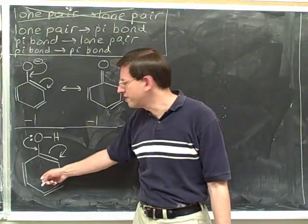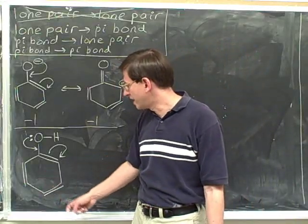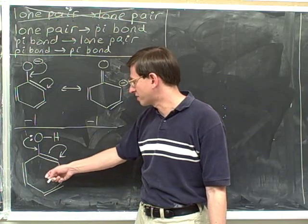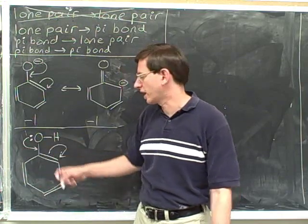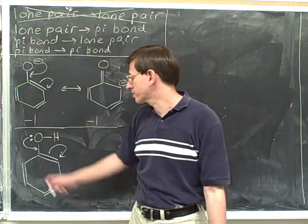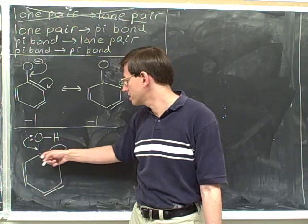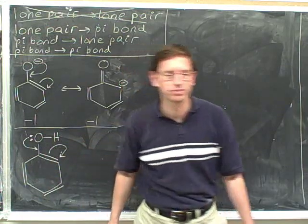I'd like you to work now with this resonant structure at the bottom left of the blackboard. I've given you the electron-pushing arrows. Try to draw the resonant structure that is suggested by these electron-pushing arrows.